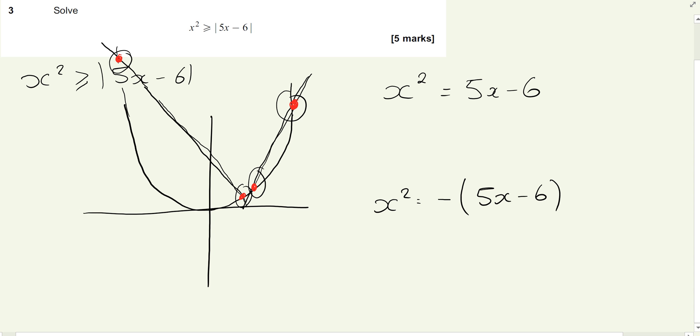So we're going to rearrange both of these into the form of quadratic, which we can then factorize and solve. So we've got x squared minus 5x plus 6 equals 0. And we've got x squared equals minus 5x plus 6. So when we rearrange that, we've got x squared plus 5x minus 6 equals 0.